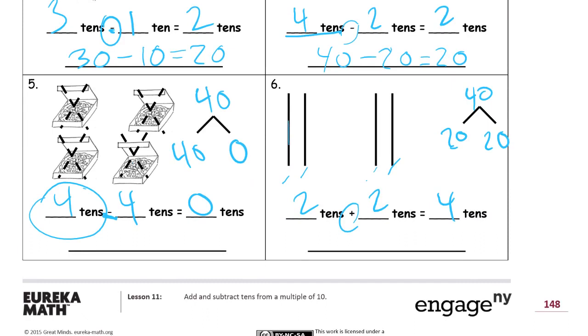And this one, the subtraction one here is four tens. So our whole is 40. And we're subtracting all 40. And it leaves us with zero. And here we have two tens, that's 20, plus two more tens, that's another 20, equals four tens, which is 40.